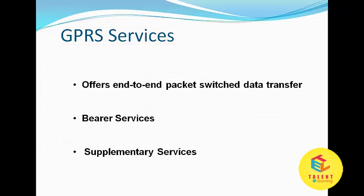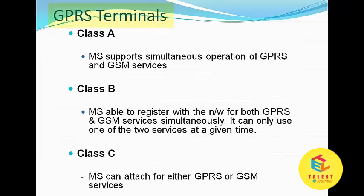There are two types of GPRS services. First, bearer services, which have two sub-types: PTP (Point to Point service) and PTM (Point to Multipoint service). The second type is supplementary services, which also has two types: SMS (Short Message Service) and CFU (Call Forwarding Unconditional).